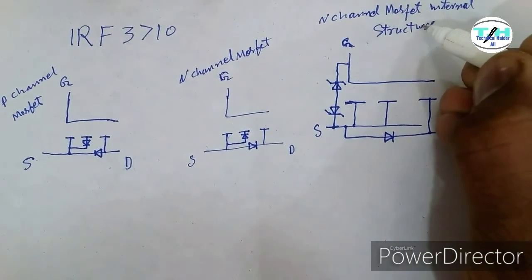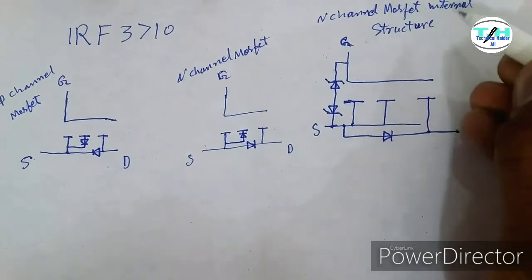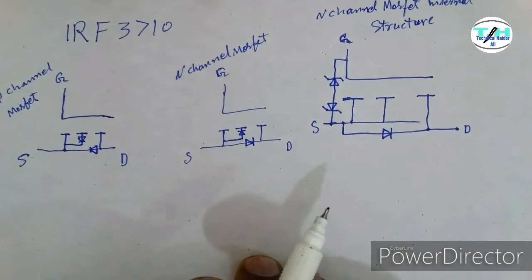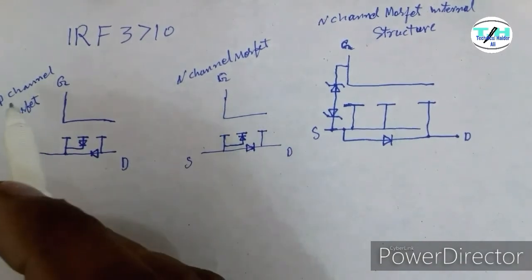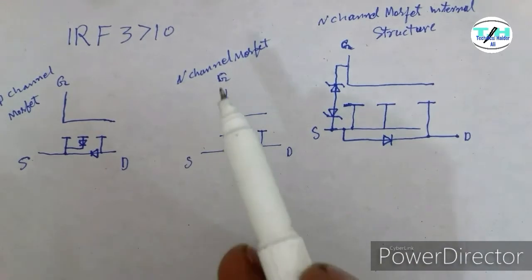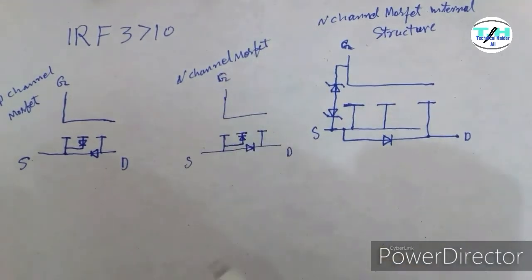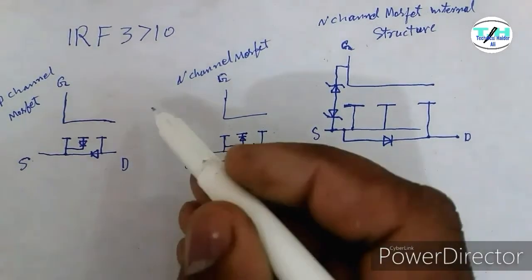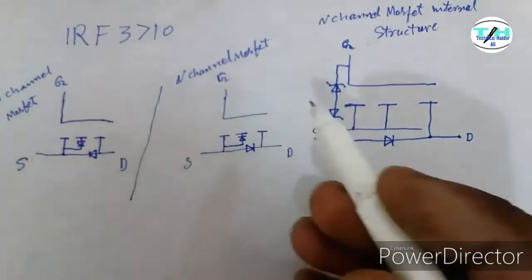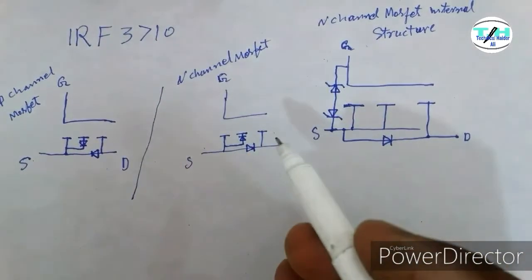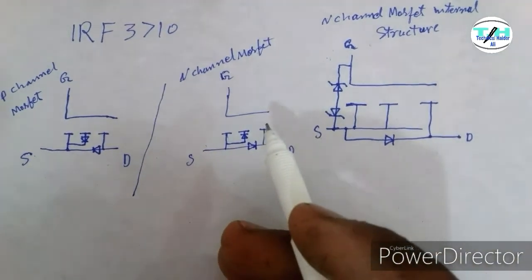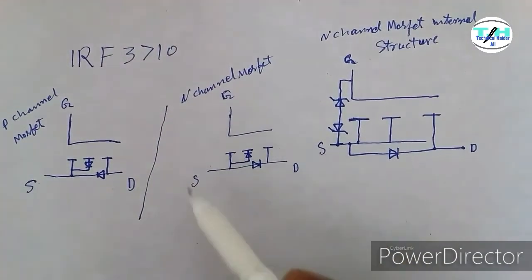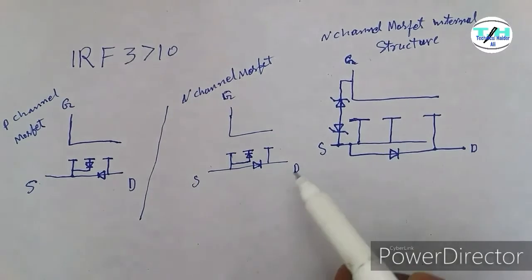This is the internal structure. The negative current from source to the drain starts to flow. This is the N-channel MOSFET, the P-channel MOSFET, and the N-channel MOSFET. The MOSFET is basically of two types: P-channel MOSFET and N-channel MOSFET. This is the symbol of the N-channel MOSFET, this is its internal structure, and this is the N-channel MOSFET symbol in the circuit diagram.